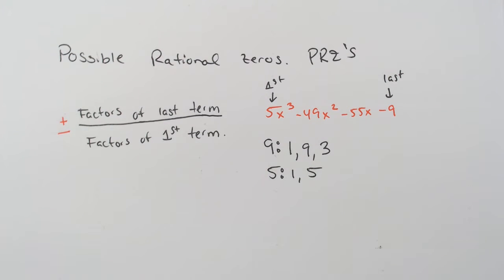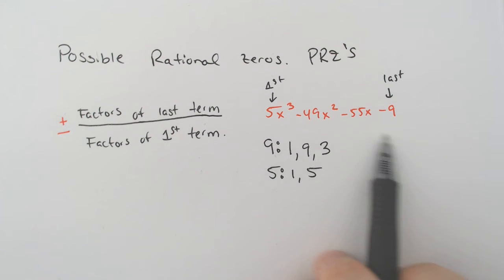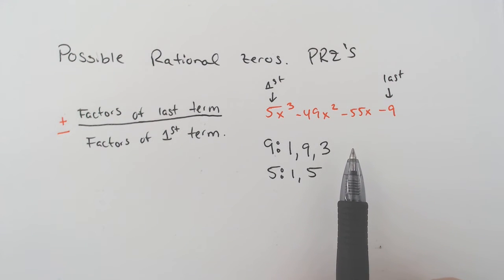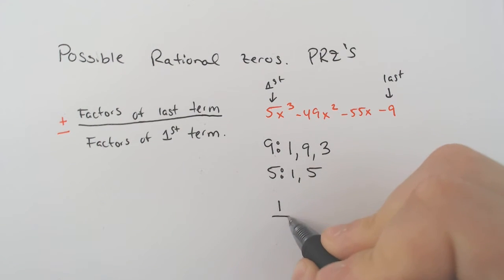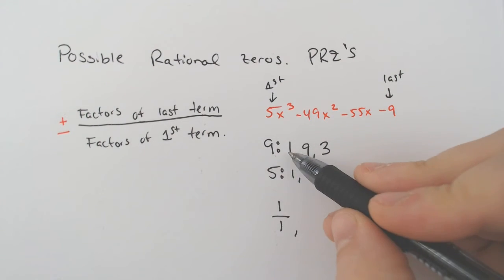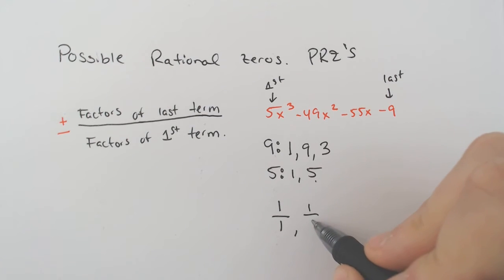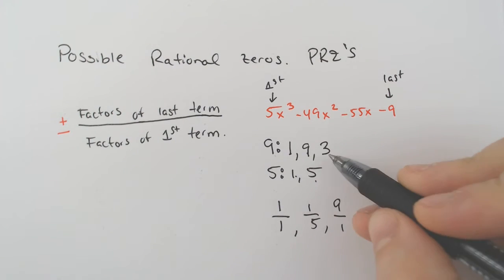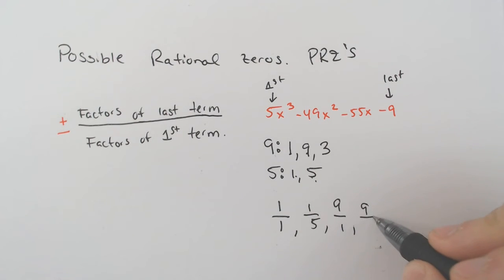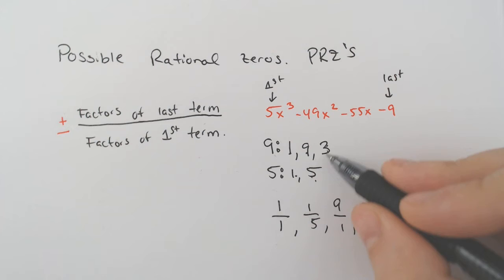If we wanted to find the possible rational zeros — which has a lot of benefit, because if you know what the possibilities are, you're not randomly guessing over and over again, since a lot of these are probably not factorable — we list out 1 over 1, then 1 over 5, then 9 over 1, and 9 over 5, and then 3 over 1, and then 3 over 5.